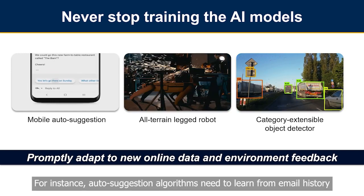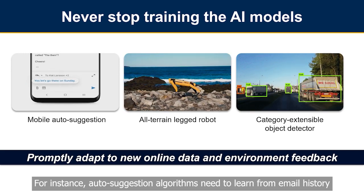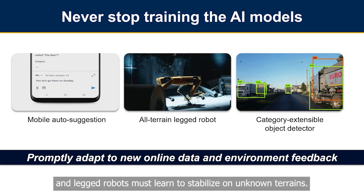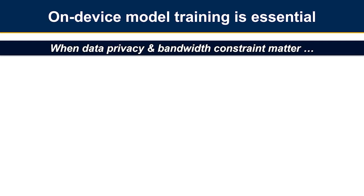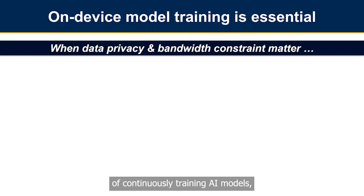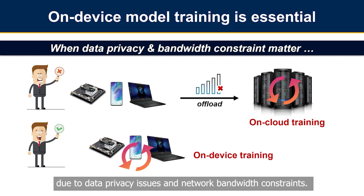For instance, autosuggestion algorithms need to learn from email history to offer relevant suggestions, and legged robots must learn to stabilize on unknown terrains. On-device training is essential to fulfill such requirements, especially when cloud-based training becomes infeasible due to data privacy issues and network bandwidth constraints.